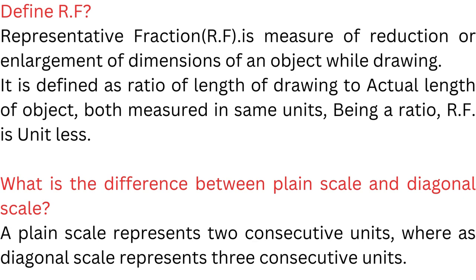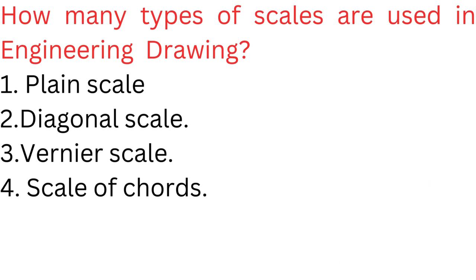What is the difference between plane scale and diagonal scale? A plane scale represents 2 consecutive units, whereas a diagonal scale represents 3 consecutive units. The types of scales used in engineering drawing are plane scale, diagonal scale, vernier scale, and scale of chords.